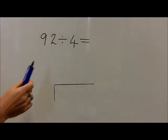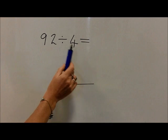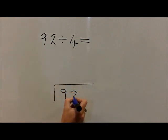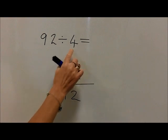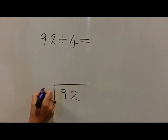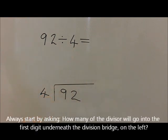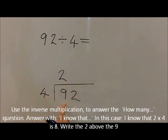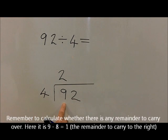With the question 92 divided by 4, we write the 92 underneath the bridge and the divide by 4 to the left of the bridge. We now ask the question how many 4's are in 9, and use our inverse times table knowledge, knowing that 2 fours are 8. Because we've got 9, we're going to have to carry 1, because 9 take away 8 is 1. So we carry 1.